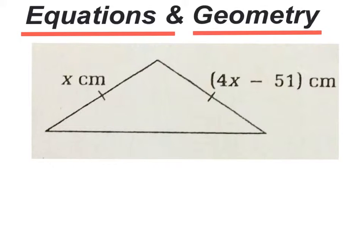Do you see the two slashes here? Those slashes indicate that those sides are exactly the same. This is an isosceles triangle.